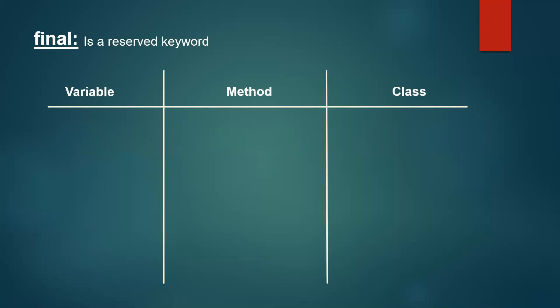For a variable, when we declare a variable of any data type and make it final, we just need to prefix the keyword final before the data type. When your variable is final, we definitely need to initialize the value to it at the time of declaration itself, and it can't be modified.